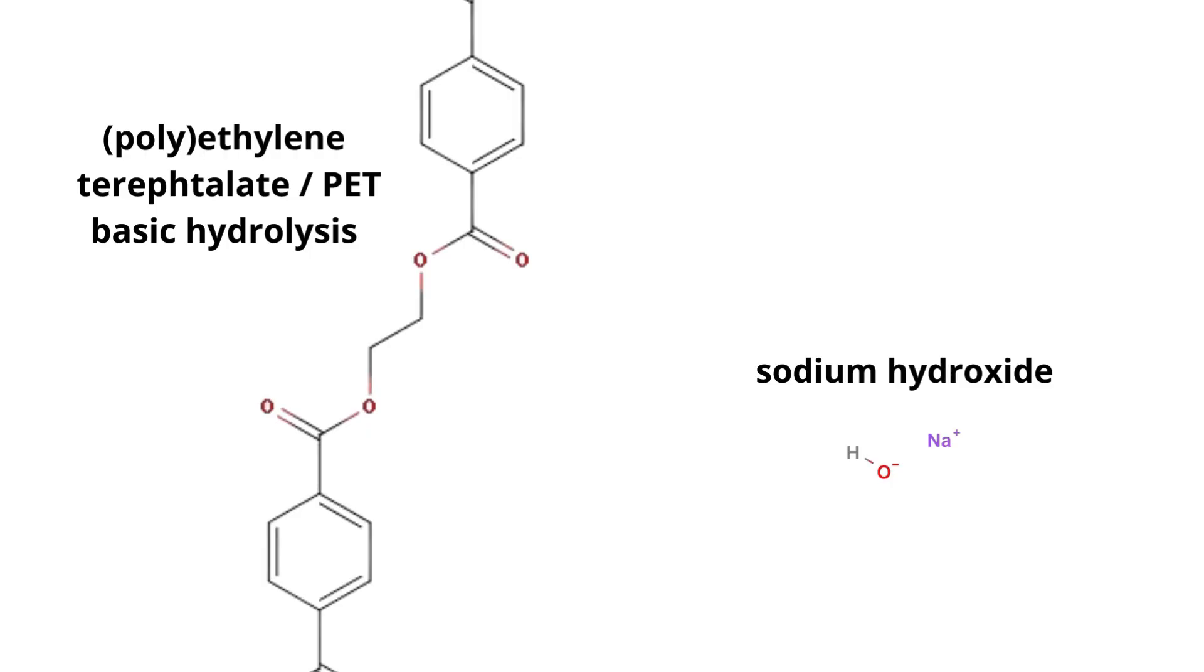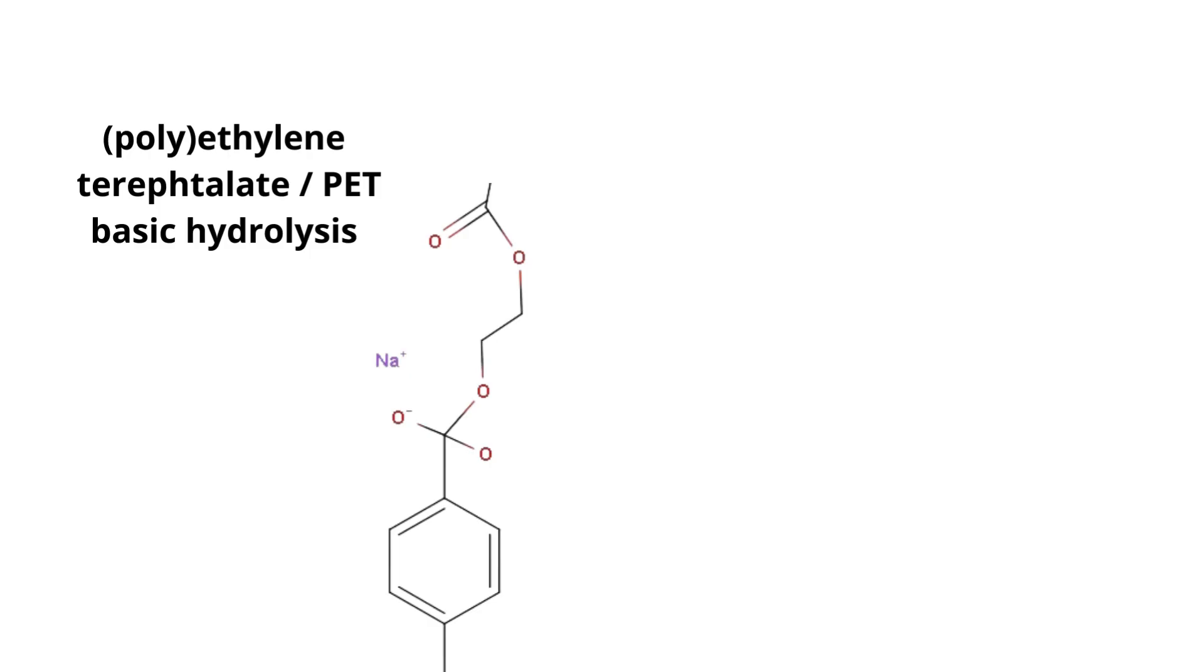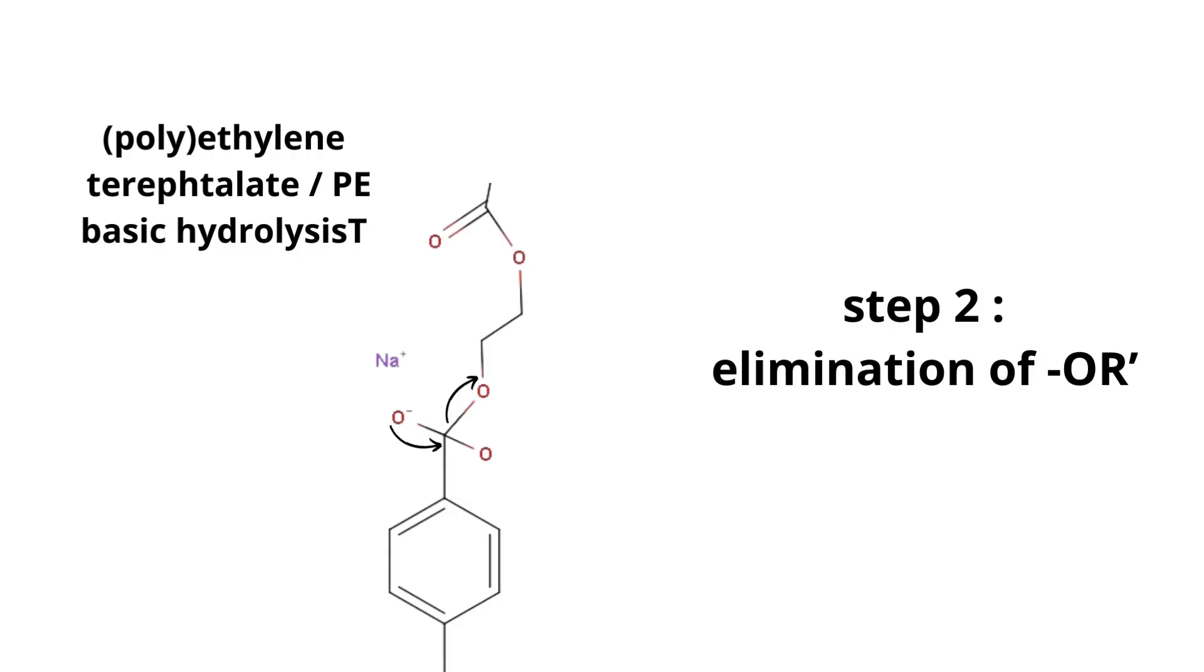At first, our sodium hydroxide attacks on the carbon of the ester, which adds a hydroxide group on it, and forms the intermediate. Then, the glycolate group is being eliminated, and keeps the negative charge. This forms the terephthalic acid and sodium glycolate.